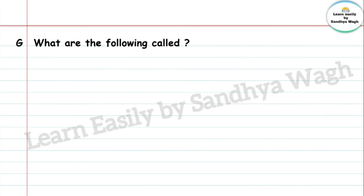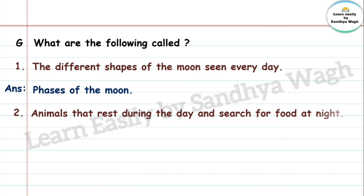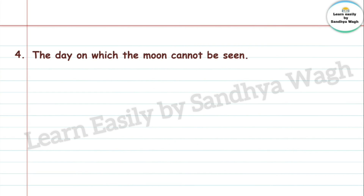What are the following called? 1. The different shapes of the moon seen every day — Phases of the moon. 2. Animals that rest during the day and search for food at night — Nocturnal animals. 3. The day on which the moon is completely round — Full moon day. 4. The day on which the moon cannot be seen — New moon day.